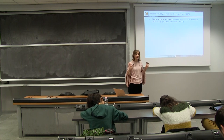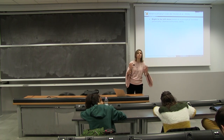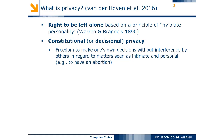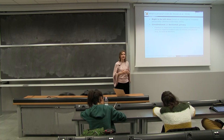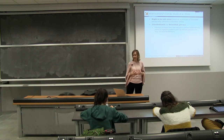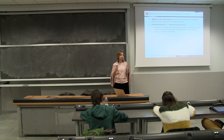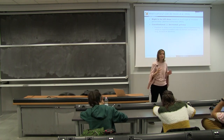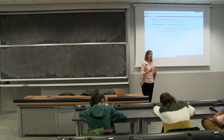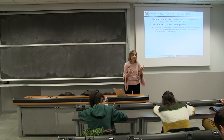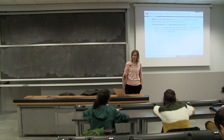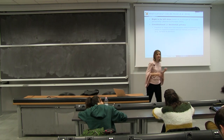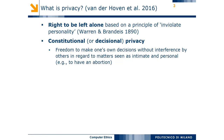Today we are going to discuss two different general meanings of privacy. The first is called constitutional privacy, or decisional privacy. This is the idea of privacy related to freedom — basically everybody has the right to take their own decisions about matters related to their intimate and personal context in a free way. We use the idea of abortion as an example: the decision to have an abortion is related to the notion of constitutional privacy.